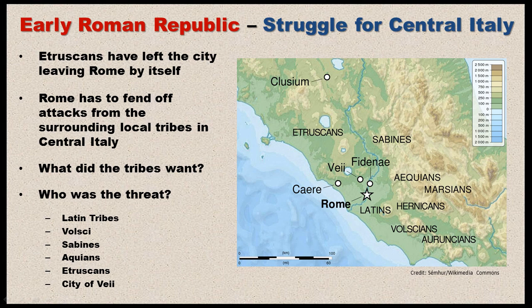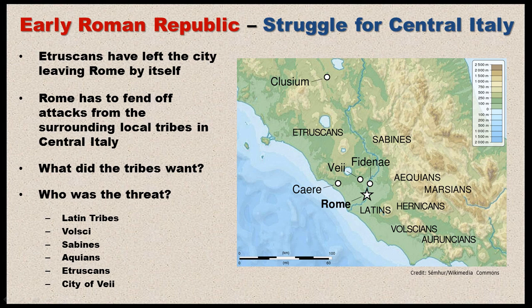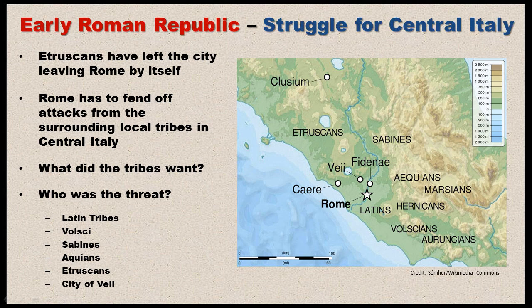Looking at the map, you can see all the tribes that surrounded the Romans, and many of them were hostile. There were the Latin tribes to the south, the Volsci, the Sabines, the Aquians located in the Apennine Mountains, the Etruscans to the north, and the city of Veii — an Etruscan city and a long-term enemy of Rome. Over the next couple of videos, we'll discuss each one of these tribes and how Rome had to deal with them before moving out to the rest of Italy.